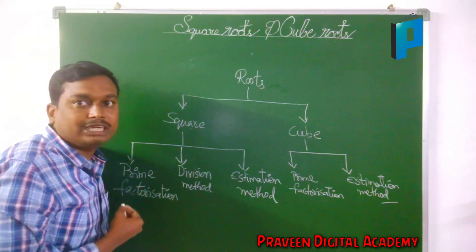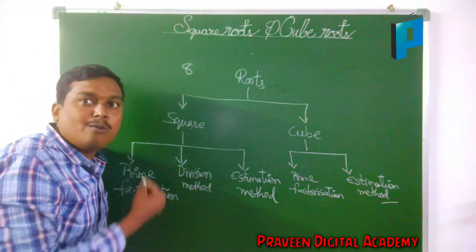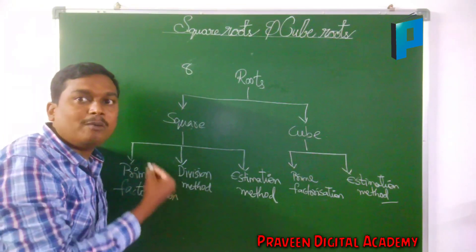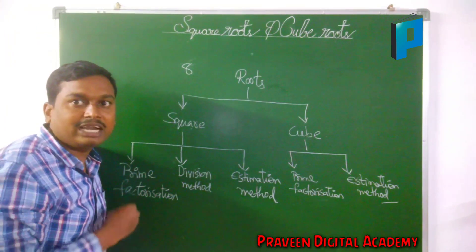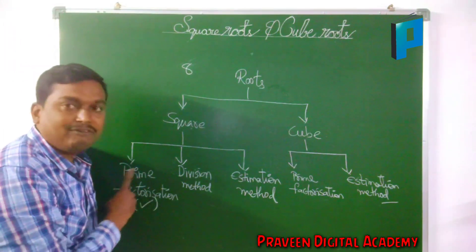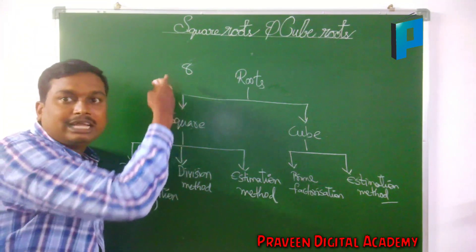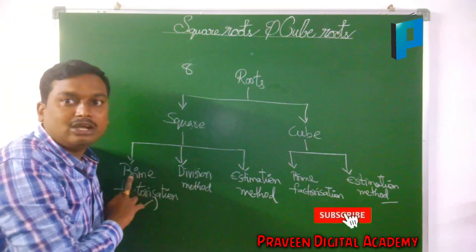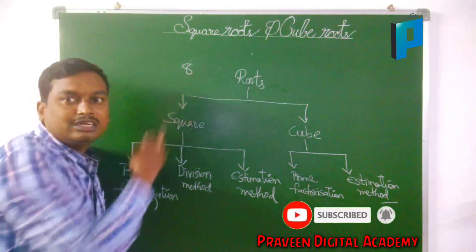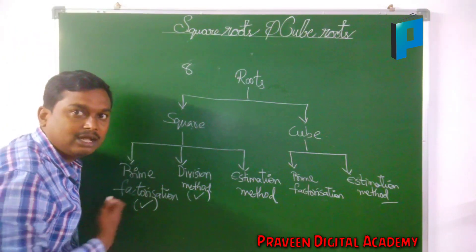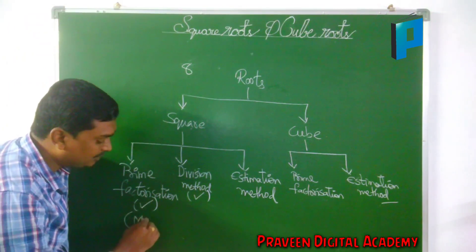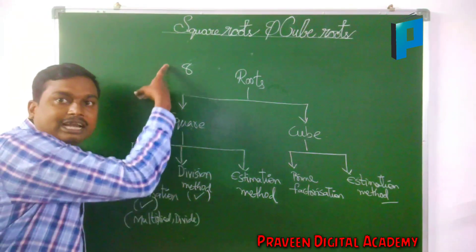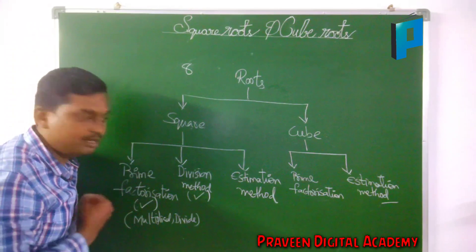If a question asks: with what number should the given number be multiplied, or with what number should the given number be divided to make it a perfect square — go with the prime factorization method to find out the square root. In prime factorization method, we find how much a number is multiplied or divided.